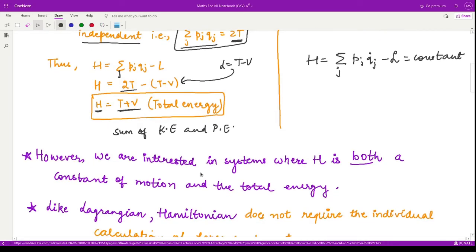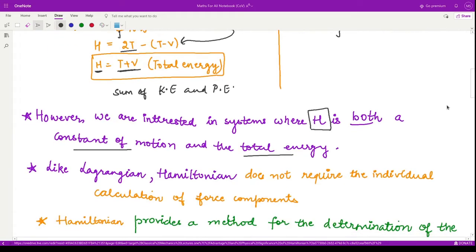But usually when we are solving real life systems, the Hamiltonian where it is both the constant of motion as well as the total energy is required. We are looking for systems for which these two conditions are true.